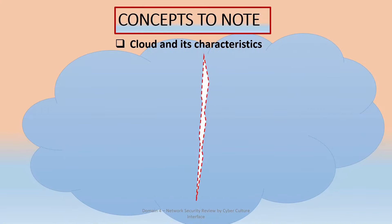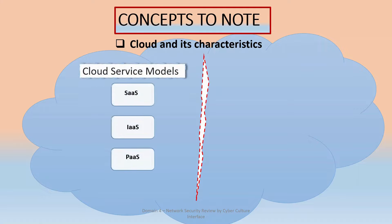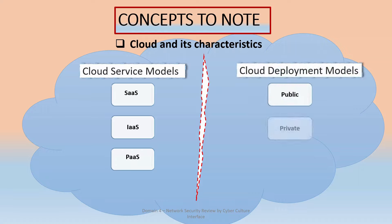Then we have the concept of cloud and its characteristics. Cloud is very trendy these days and it's important that you understand it as a cybersecurity professional. There are cloud service models: SaaS (Software as a Service), IaaS (Infrastructure as a Service), and PaaS (Platform as a Service). These are concepts you need to understand and look out for while studying.